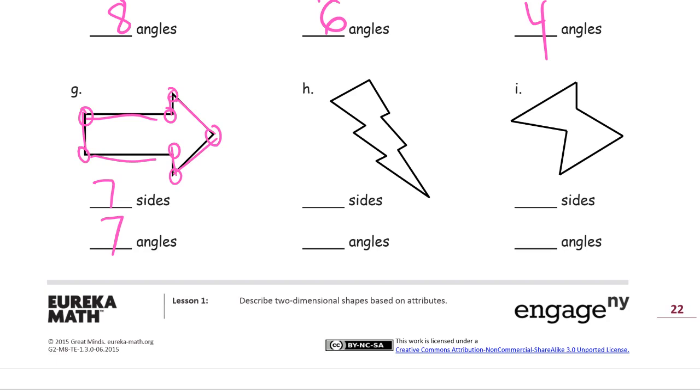This one's going to have a lot of sides. Some of them are short, but you've got to count them all. One, two, three, four, five, six, seven, eight, nine, ten, eleven. Angles. Remember, some of these are innies too. One, two, three, four, five, six, seven, eight, nine, ten, eleven.